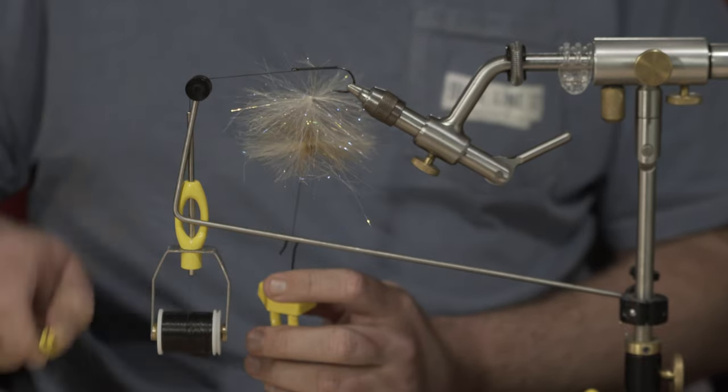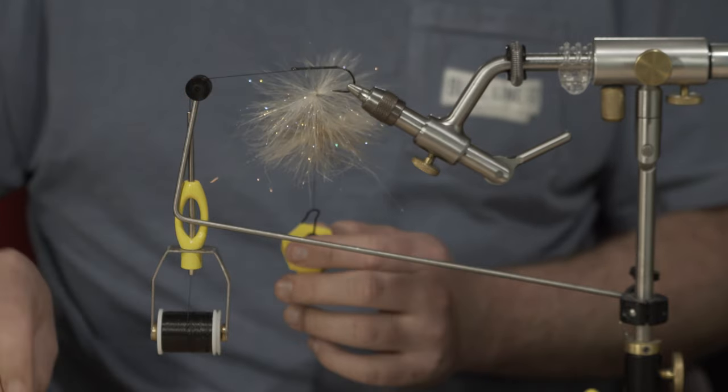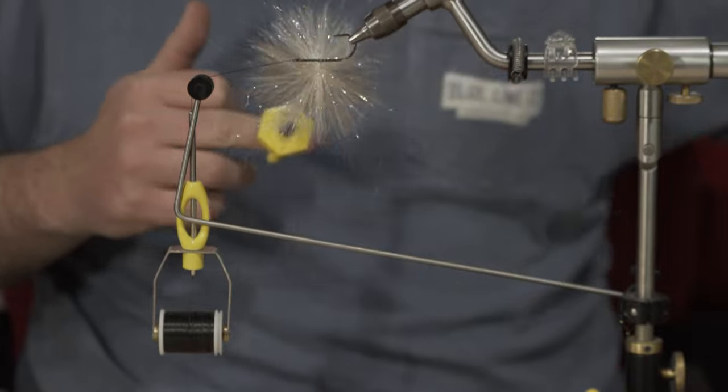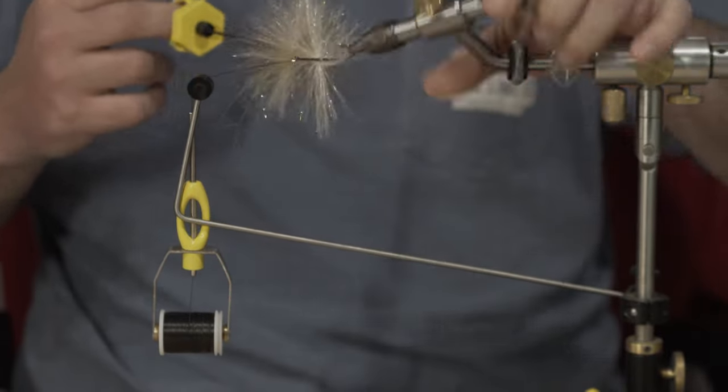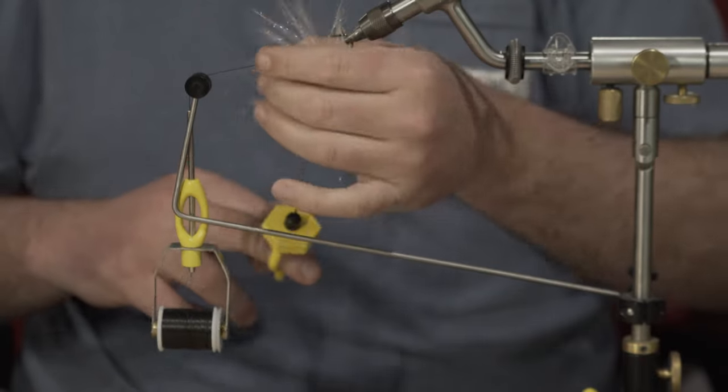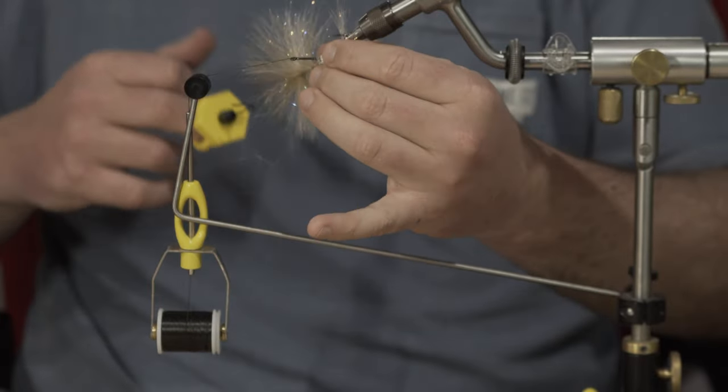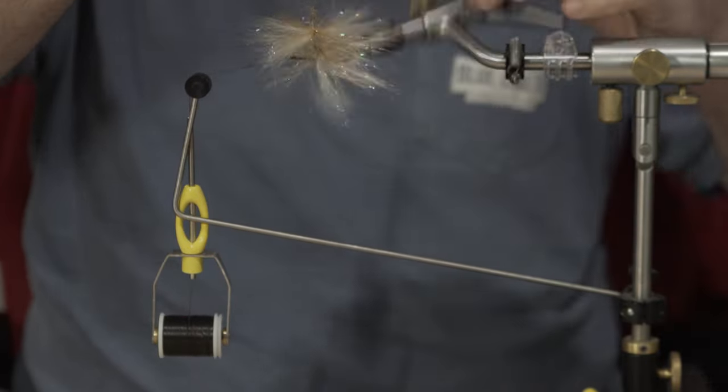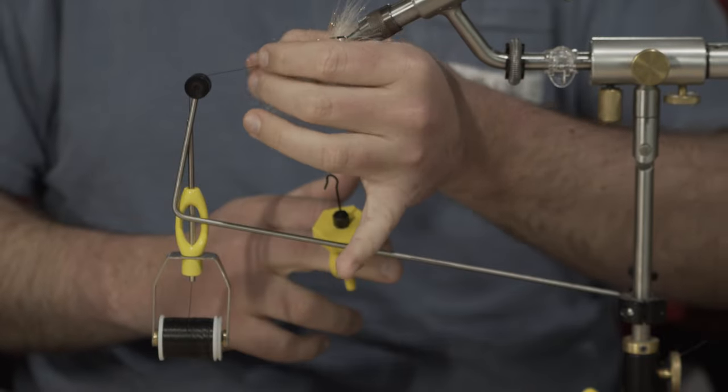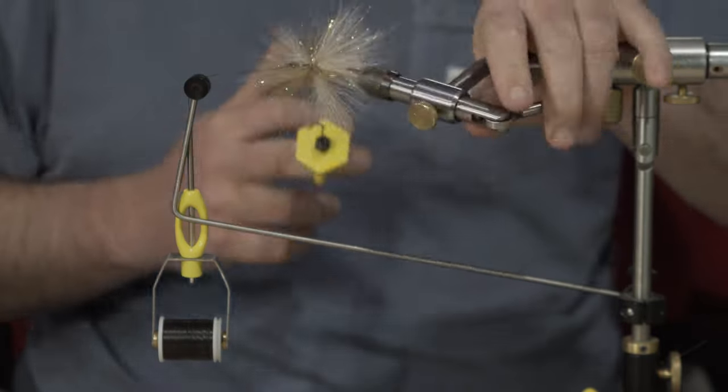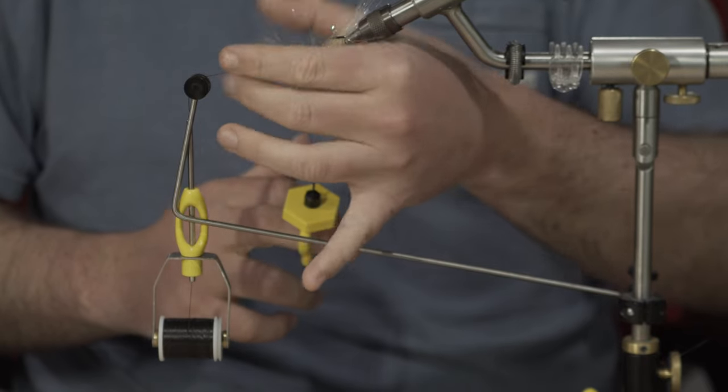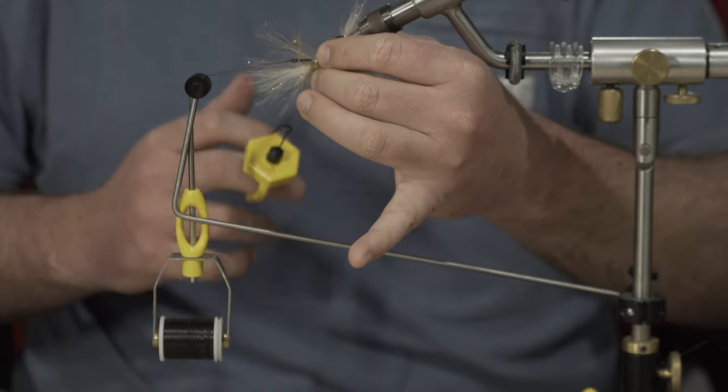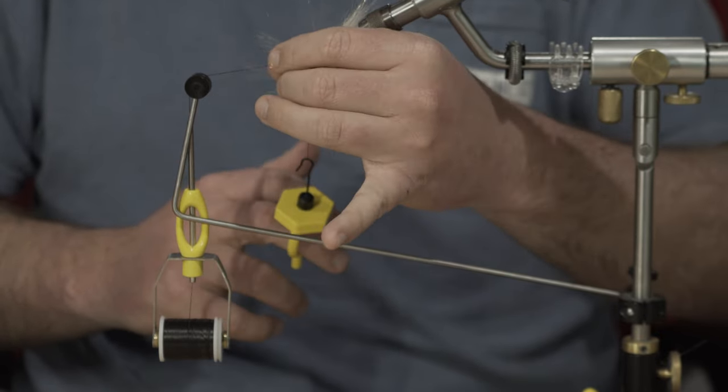And once we have that done, we've got our nice loop here. We're going to start spinning this till we get down into the brush. Now that we hit the brush, we're going to start wrapping it forwards. Just going pretty slow, being able to help pull the fibers rearwards with our left hand while we spin. These fibers that I used are pretty stiff, so they're going to want to kind of stick forwards. So that's why I'm just slowly pulling them backwards as I wrap.